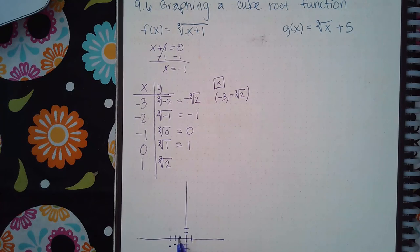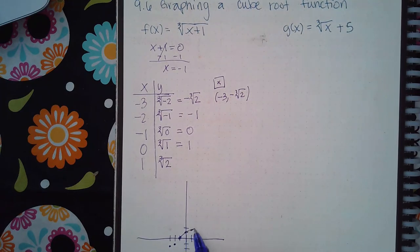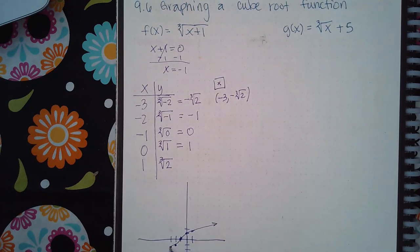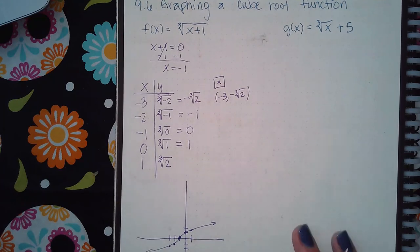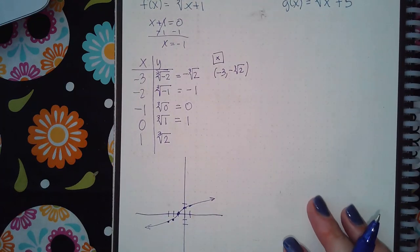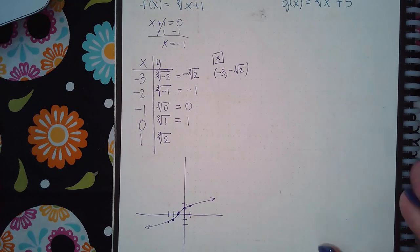Negative 2 and negative 1. 0 and 1. I'm sorry, negative 1 and 0. 0 and 1. And then 1 and 1.25. So you get this kind of graph, which matches the normal behavior of a cubic function.